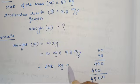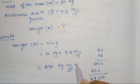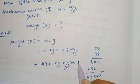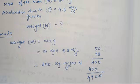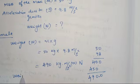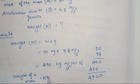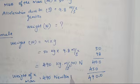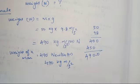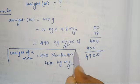Kilogram meter per second square, or we can write it as Newton. The weight unit. The weight of a man is equal to 490 Newton, or 490 kilogram meter per second square. Both are equal. Clear?